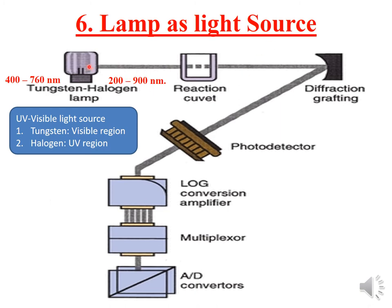Generally in the fully automated analyzer, we use a tungsten halogen lamp. The tungsten component is used for the visible range, and the halogen lamp is used for carrying out analysis in the ultraviolet region.